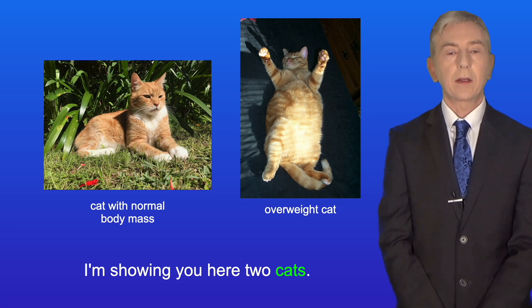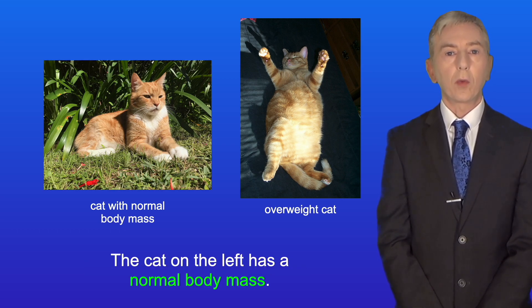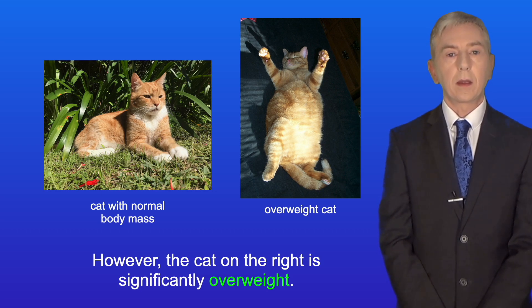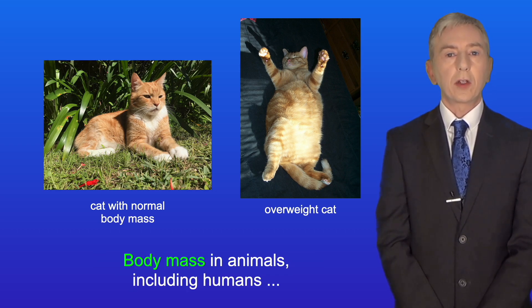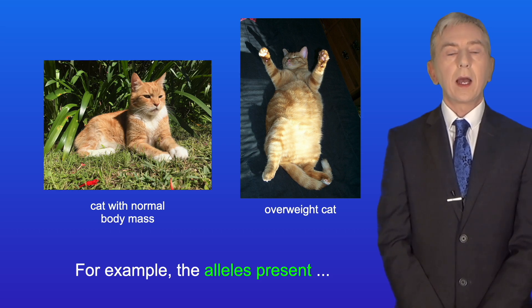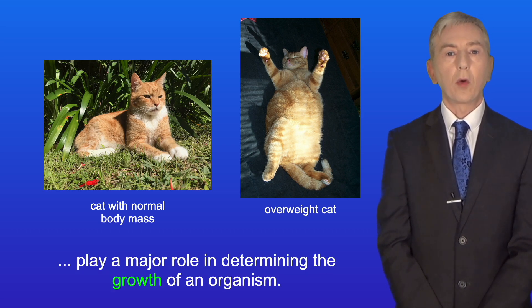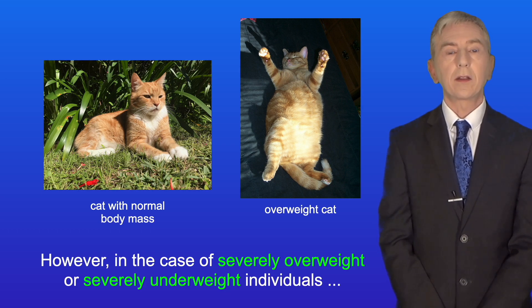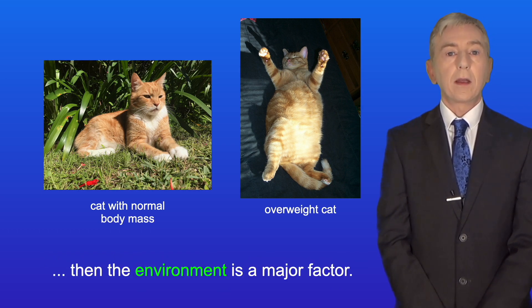I'm showing you here two cats. The cat on the left has a normal body mass. However, the cat on the right is significantly overweight. Now body mass in animals, including humans, is determined by a combination of genetics and the environment. For example, the alleles present play a major role in determining the growth of an organism. However, in the case of severely overweight or severely underweight individuals, the environment is a major factor.